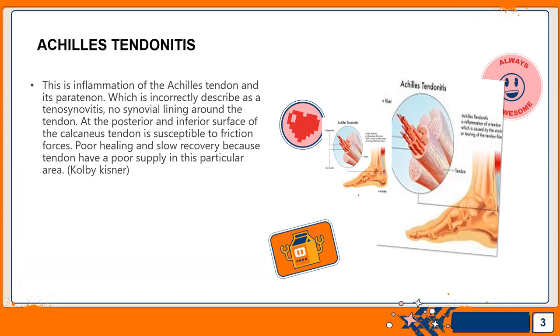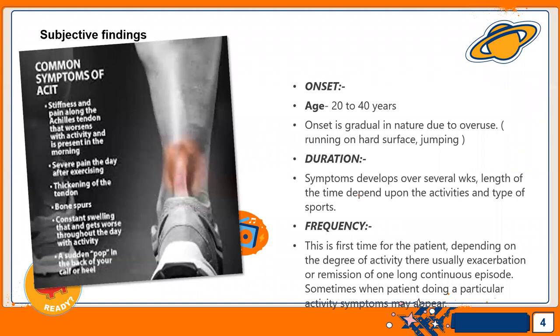In this part, how do we start with the patient? Age is 20 to 40 years. Onset is gradual in nature due to overuse, running on hard surface, and jumping.